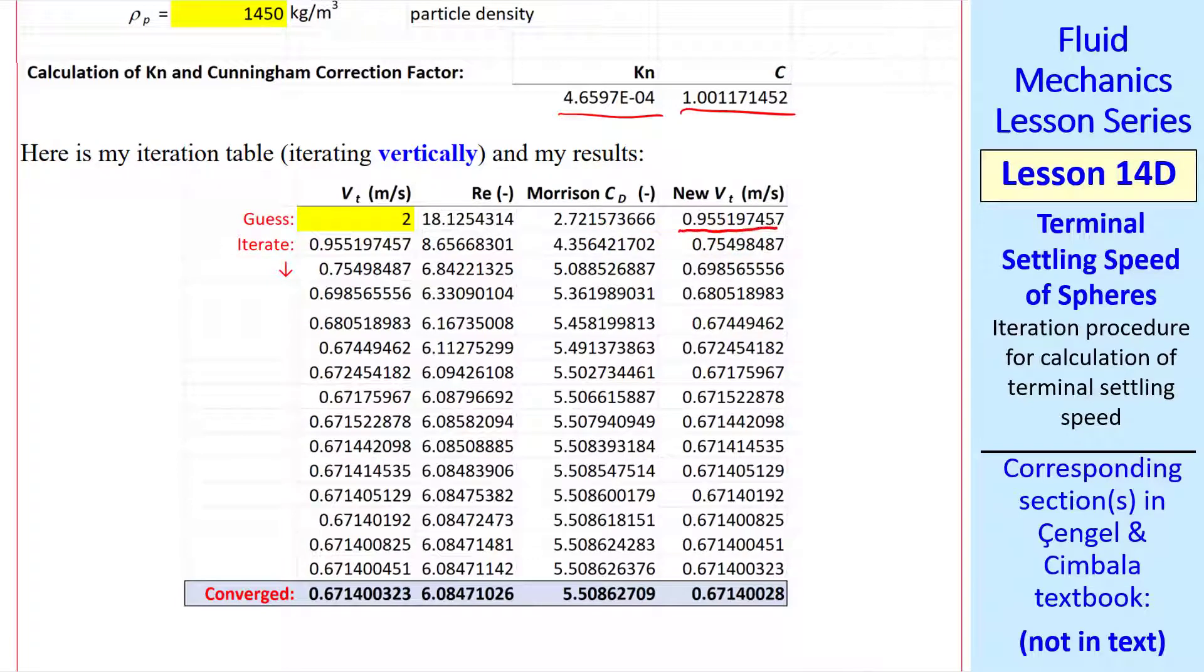Again, the key is to use this vt as your next guess. In Excel, this cell refers to this cell. Then I repeat Reynolds number, cd, new vt, new guess, Reynolds number, cd, new vt, etc. And you can see that we have convergence to the fourth digit in less than 10 iterations. I did several extra iterations until I get my final converged answer to about seven digits.